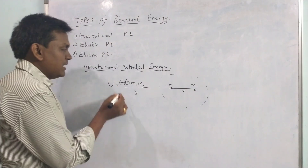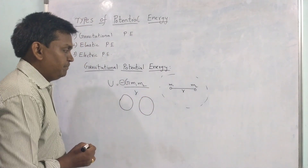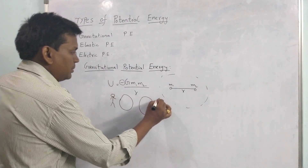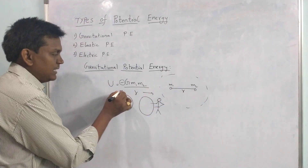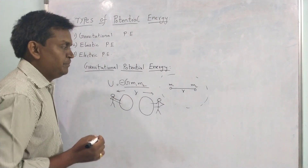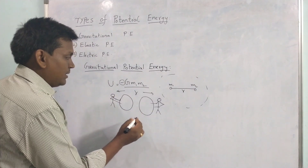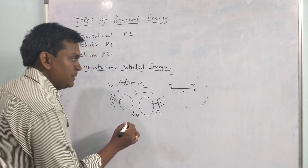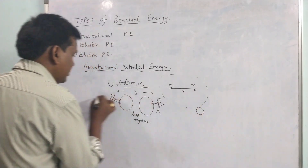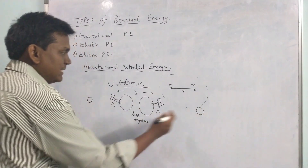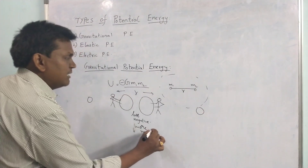Why is it always negative? If you consider two masses close to each other, and two persons are trying to pull them away — one person is trying to pull the mass in one direction and the other person in the other direction — they are trying to separate the two masses. So when the two masses are close to each other, the force will be more and that is negative. When they are pulled apart, it will be less negative.